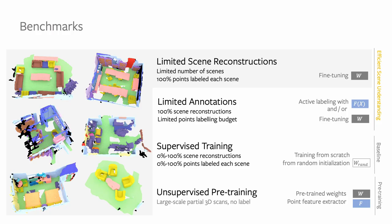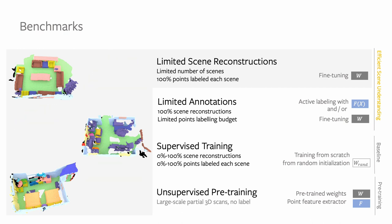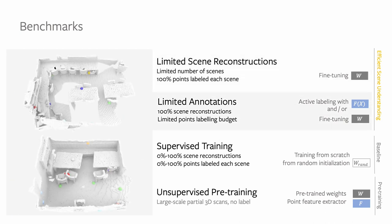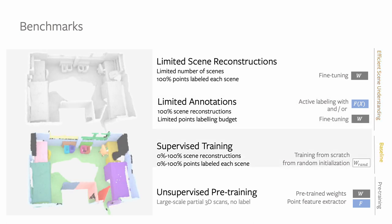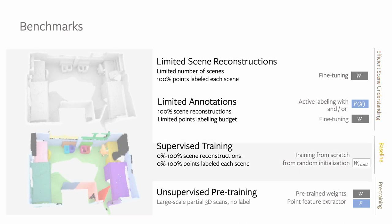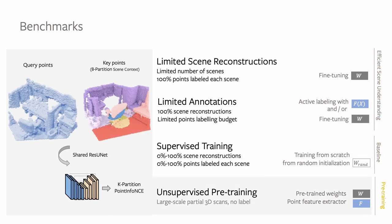We set up two benchmarks for data-efficient 3D scene understanding. First, limited scene reconstructions, where we only use a subset of scenes for training. Second, limited annotations, for instance only 20 points annotated per scene for training. We provide relevant baselines and explore a solution based on unsupervised pre-training.